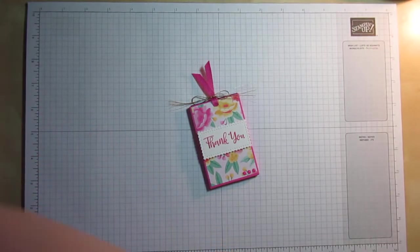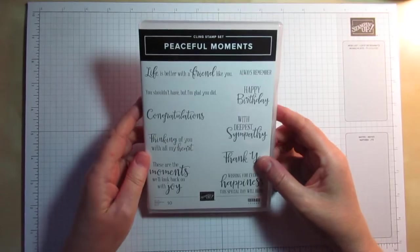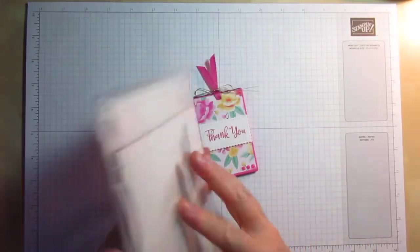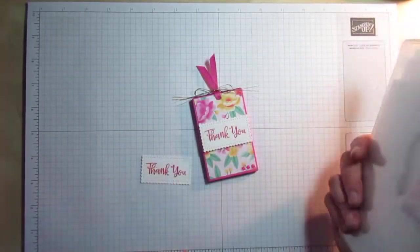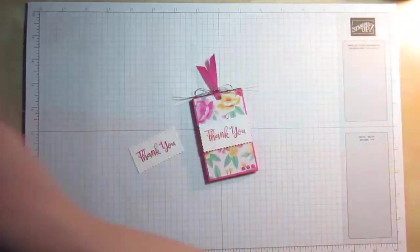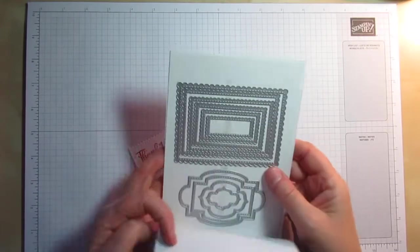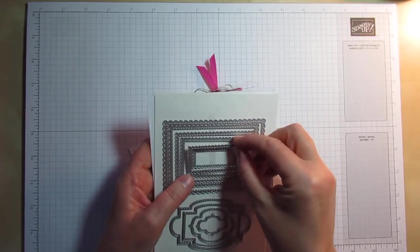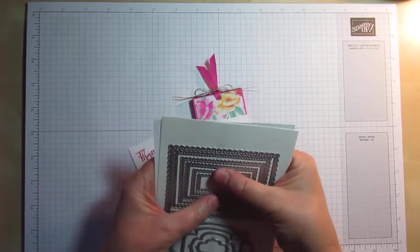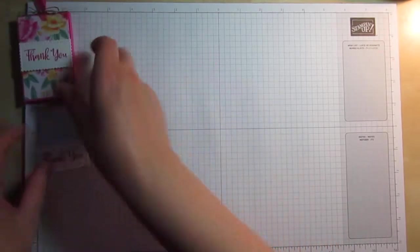And the thank you sentiment is actually from the Peaceful Moments stamp set. It's a cling stamp set, so it's the red rubber. And I've already stamped and die cut that ahead of time, just to save clambering about with my big shot. But I used the Stitch So Sweetly dies, and it was the second sized scalloped rectangle here that I used to cut out my sentiment. So I'm going to get on and show you how I made this little box.